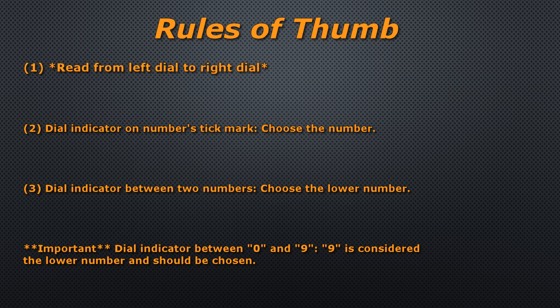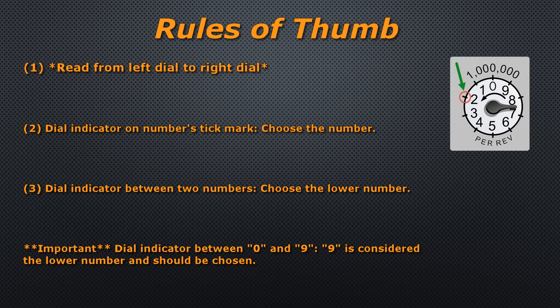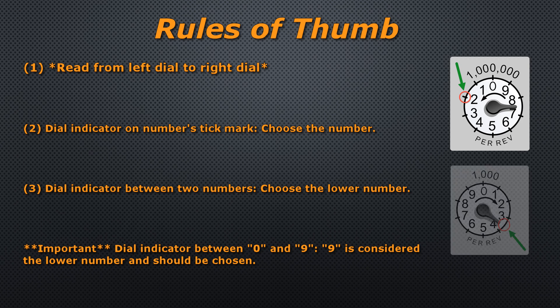Here are some general rules of thumb for reading the gas meter dials. First, you start from left to right. Second, take note of the position of the dial indicator. If the indicator is right on the number's tick mark, choose that number. Third, if the indicator is between two numbers, choose the lower of the two numbers.